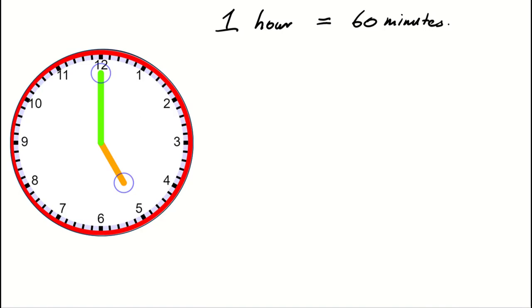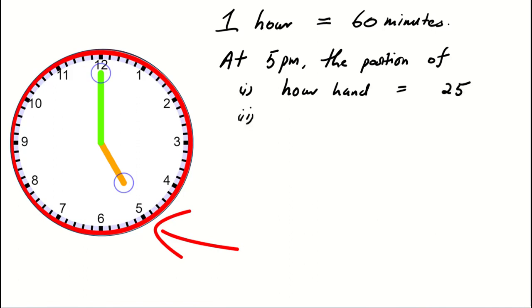At 5 PM, the hour hand points at the number 5, which we consider as the 25th unit, while the minute hand is at the 0 unit.